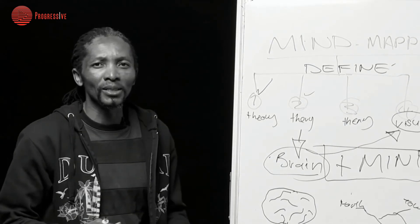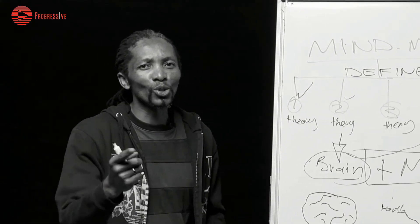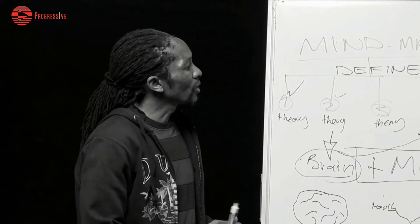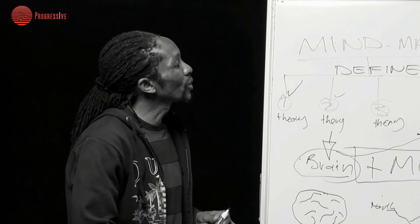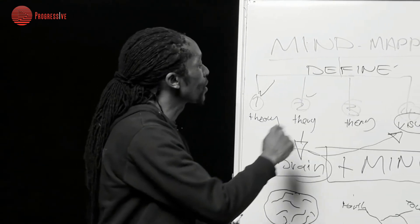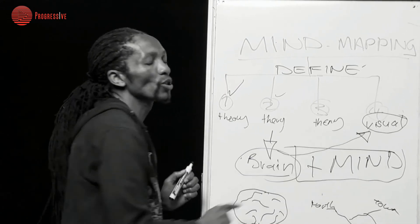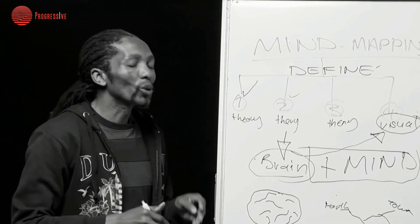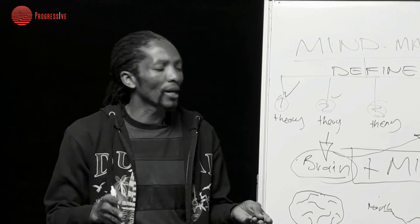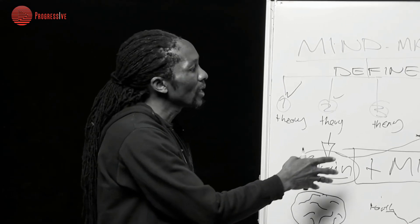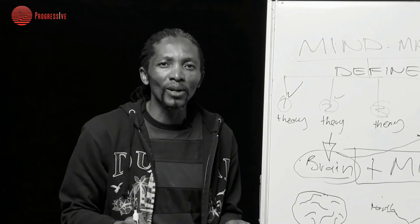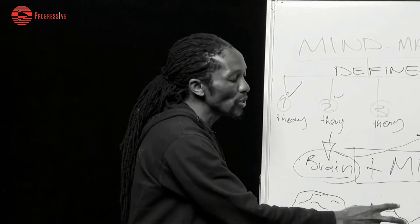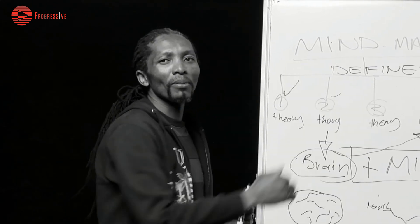When somebody tells you 'mind mapping,' what comes into your head is already about the brain. When somebody talks about a map, it's about the geographical part. In this segment I just want you to understand that you can define mind mapping without the theoretical part, but only through the visual aspect. Try to get on the internet and find other ways to simply define this. Here it was more simple and straightforward — you use the mind and the physical knowledge you already have to define what mind mapping is all about.